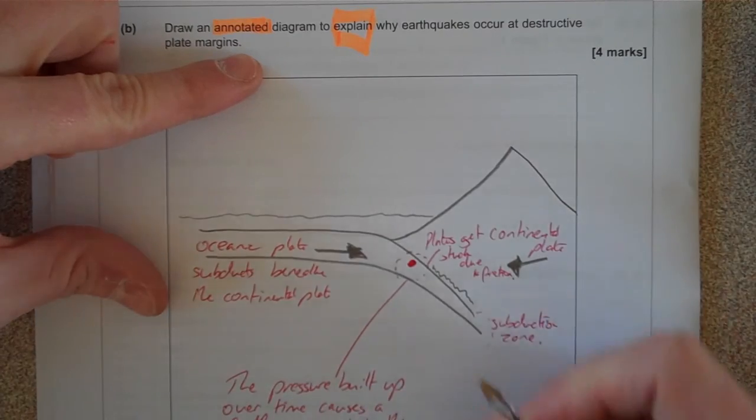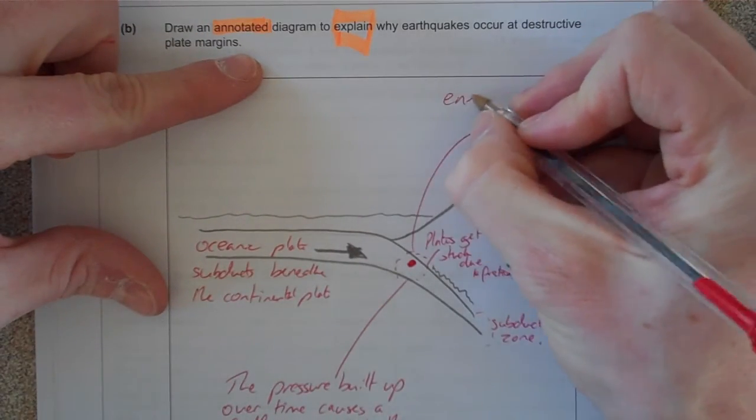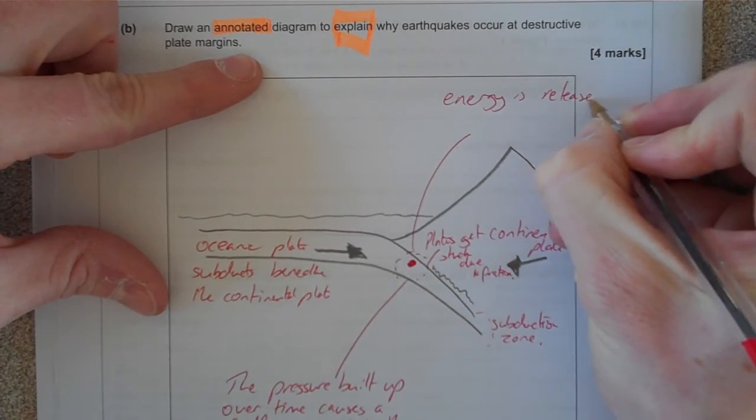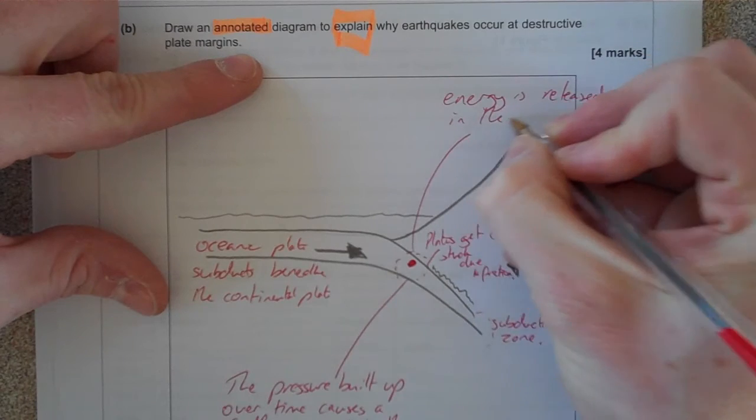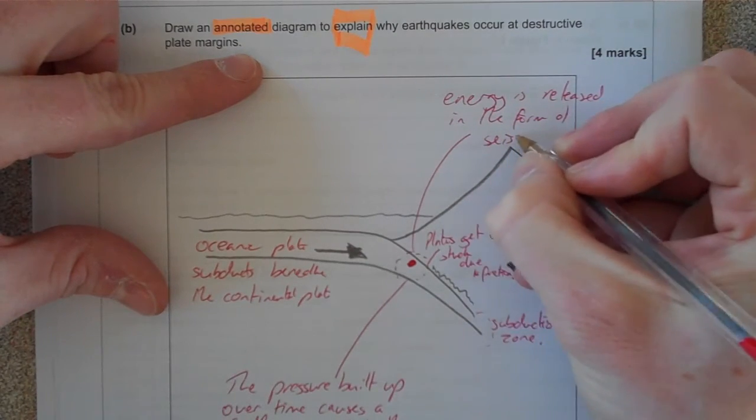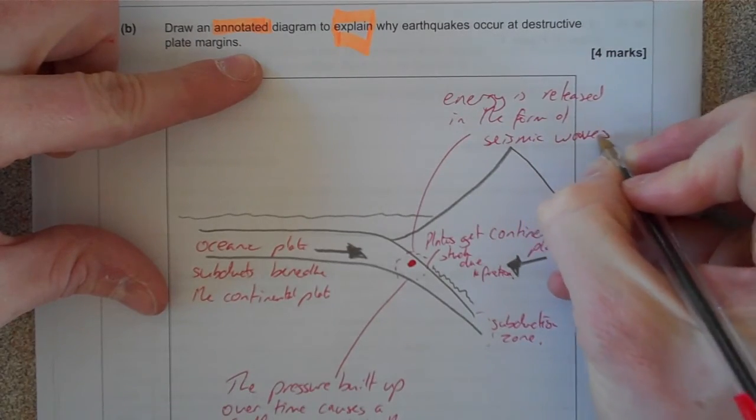energy is released in the form of seismic waves. And that effectively is the earthquake, the seismic waves radiating out from that point.